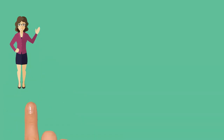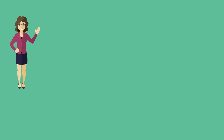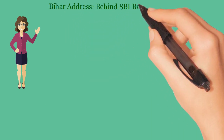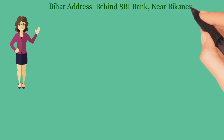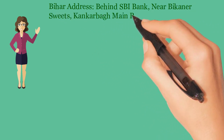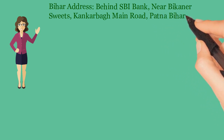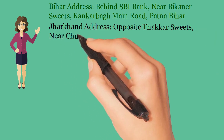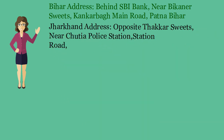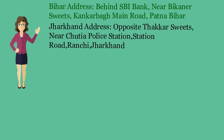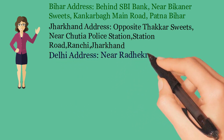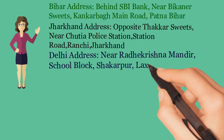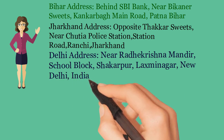If you want to start your own NGO, you can contact us at the following addresses. Bihar Address: Behind SBI Bank, Near Bikana Suites, Kang Harbor Main Road, Patna, Bihar. Jharkhand Address: Opposite Thacker Suites, Near Chudiapala Station, Station Road, Ranchi, Jharkhand. Delhi Address: Near Radha Krishna Mandir, School Block, Shakarpur, Laxmi Nagar, New Delhi, India.